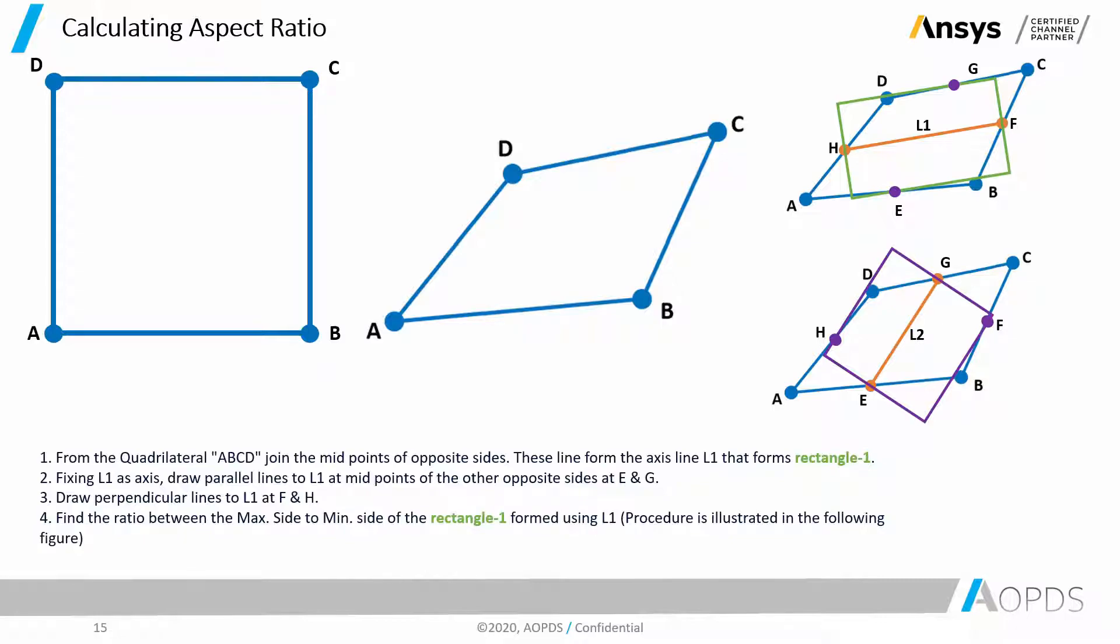Now, find the ratio between the max side to mean side of the rectangle one formed using L1, and the procedure is illustrated in this picture. So, if I find the max side and mean side and have that ratio and compare the same ratio with the other rectangle that I created in the second process for the purple rectangle, then the maximum of either of these ratios is going to give me the aspect ratio for this quad element.